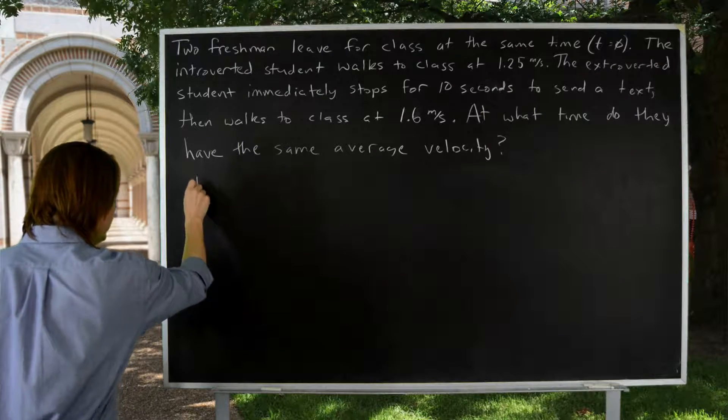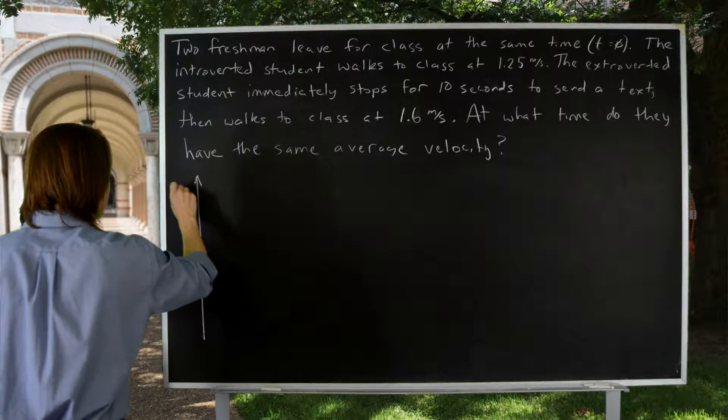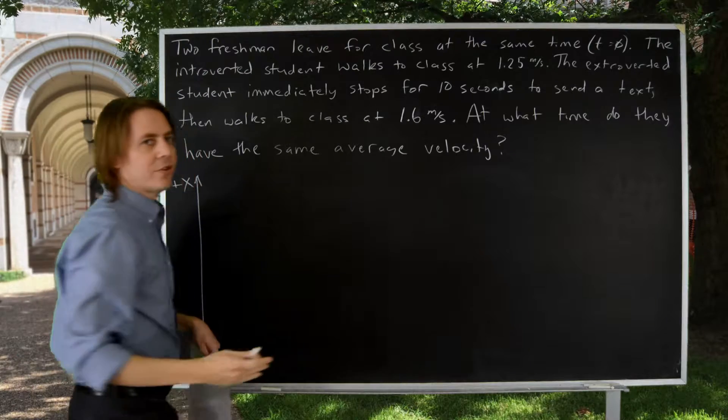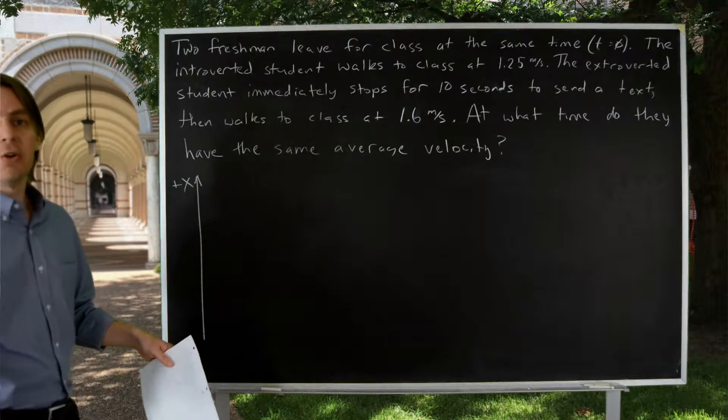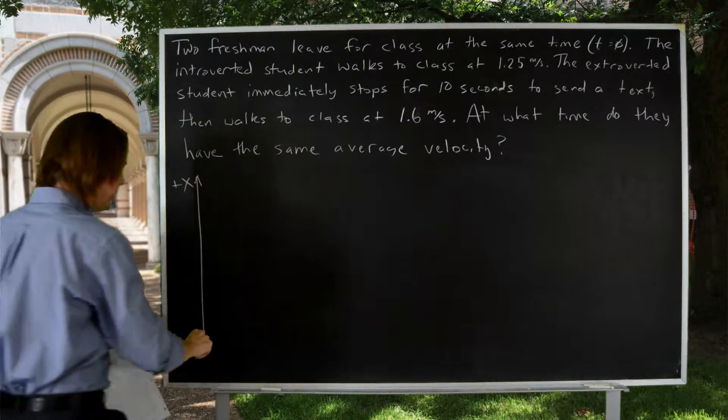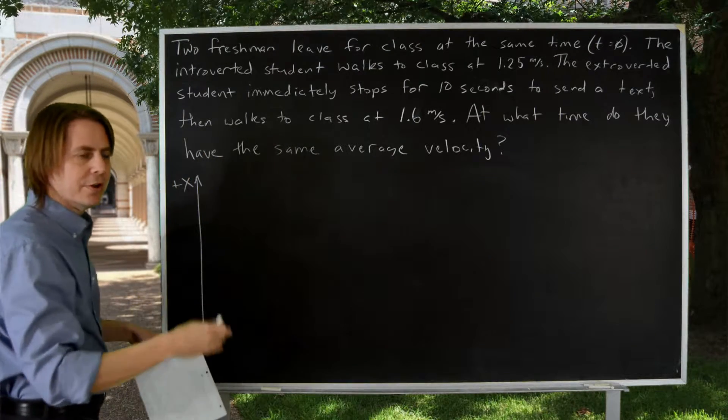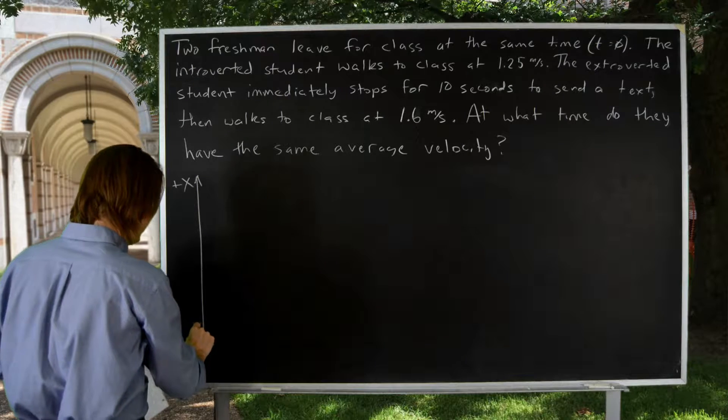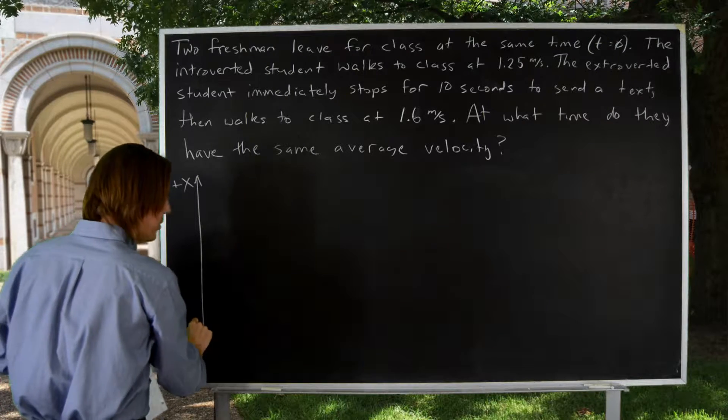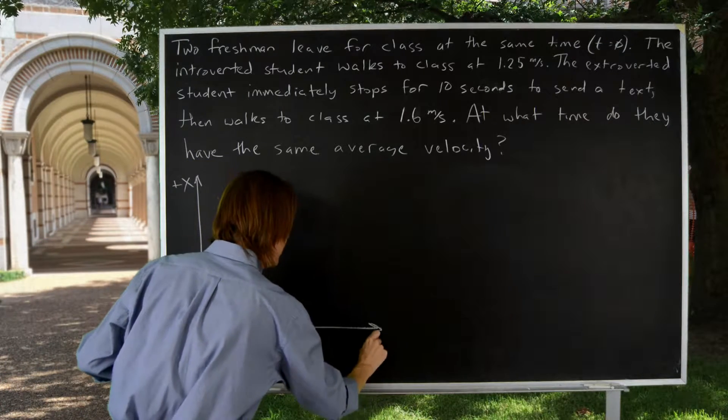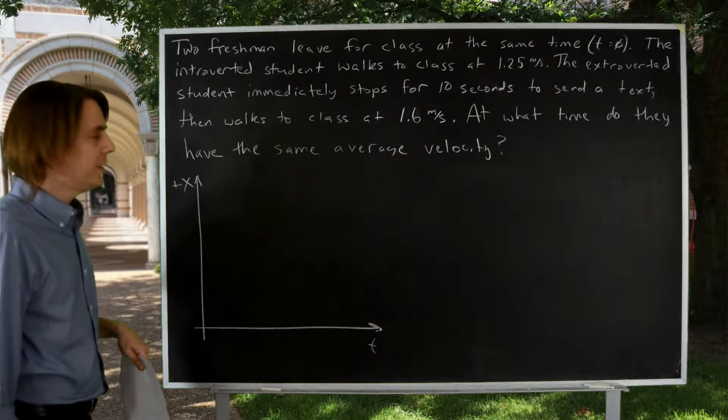So I'm going to plot here the x-axis, and in this case the x-axis is really just the path to get to class. So the origin will be where they start and the class is up here somewhere. Notice in this problem we don't have to actually get there, it's really just about their motion. The horizontal axis will be time, as it always is in kinematics.